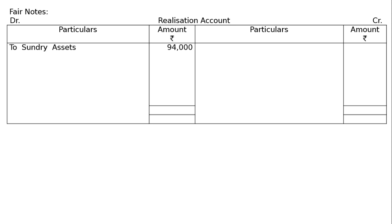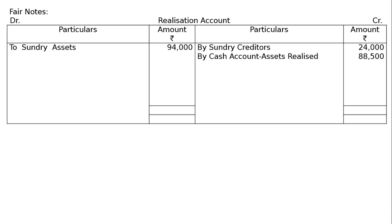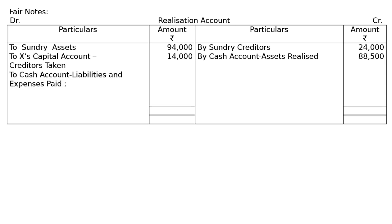Now the realization account. Debit: to sundry assets rupees 94,000. Credit: by sundry creditors rupees 24,000; by cash account — assets realized rupees 88,500. Debit: to X's capital account — creditors taken over by X rupees 14,000. To cash account for liabilities and expenses paid: sundry creditors rupees 7,500 and expenses of realization rupees 500, making total payment rupees 8,000.